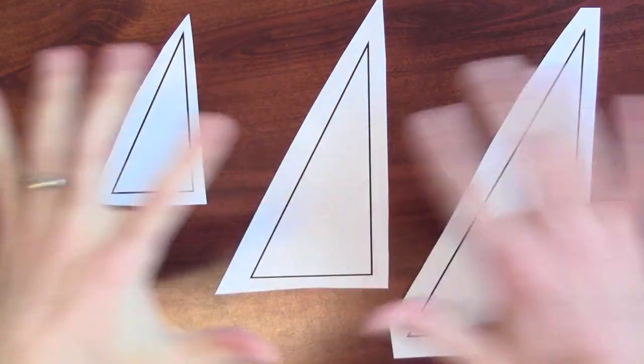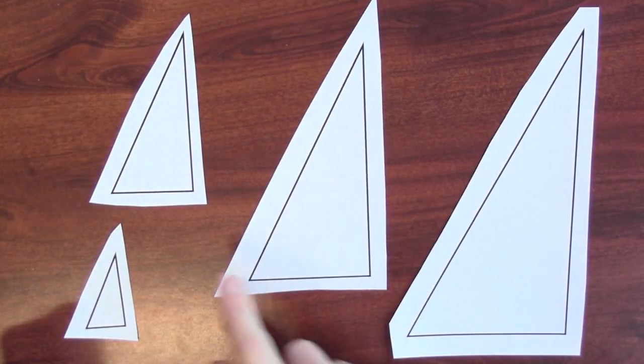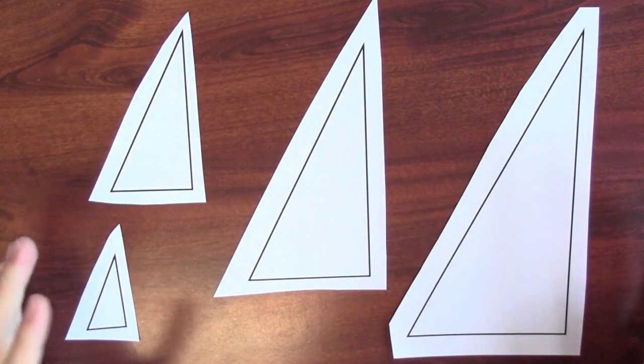What's trigonometry? Well, here's the basic idea. I've got a bunch of right triangles. These are all right triangles, and this angle is the same in all of them, but they're all different sizes.